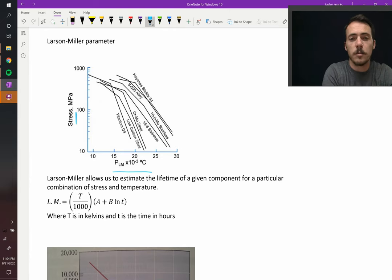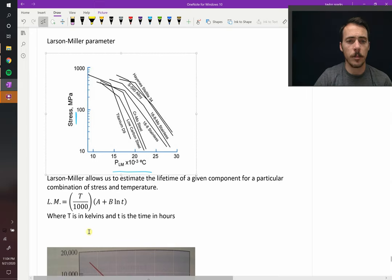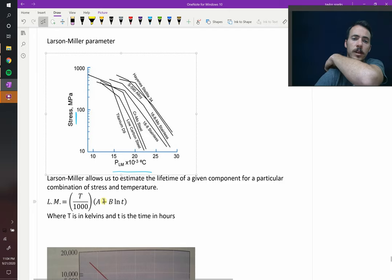In this case, it's been multiplied by 10 to the negative 3, and it has degrees Celsius. The Larson-Miller parameter is typically as follows: it's temperature usually divided by 1,000, multiplied by A plus B natural log of t, where A and B are constants for your given material. t is usually time in hours, T is temperature in Kelvin.